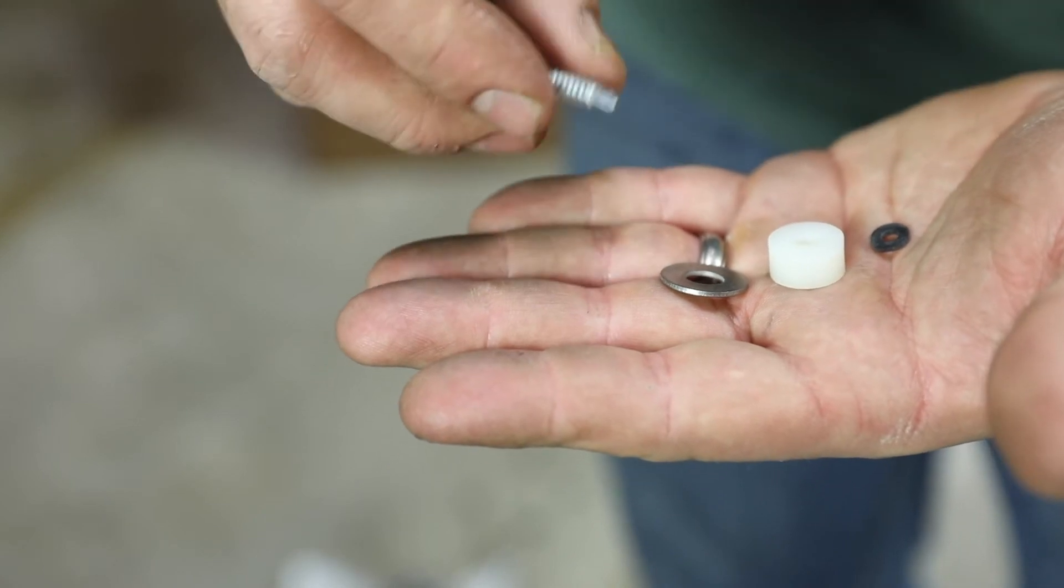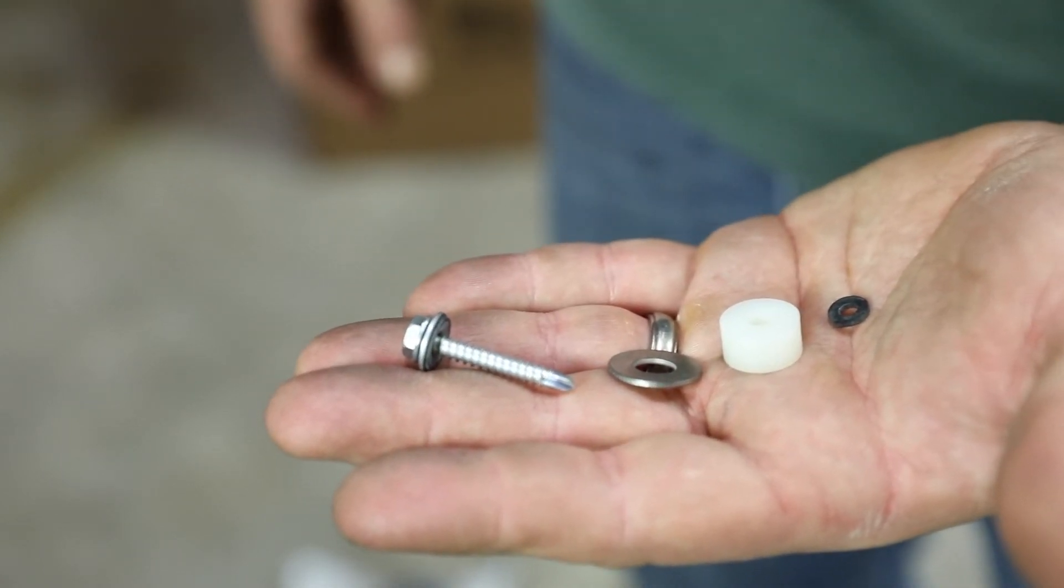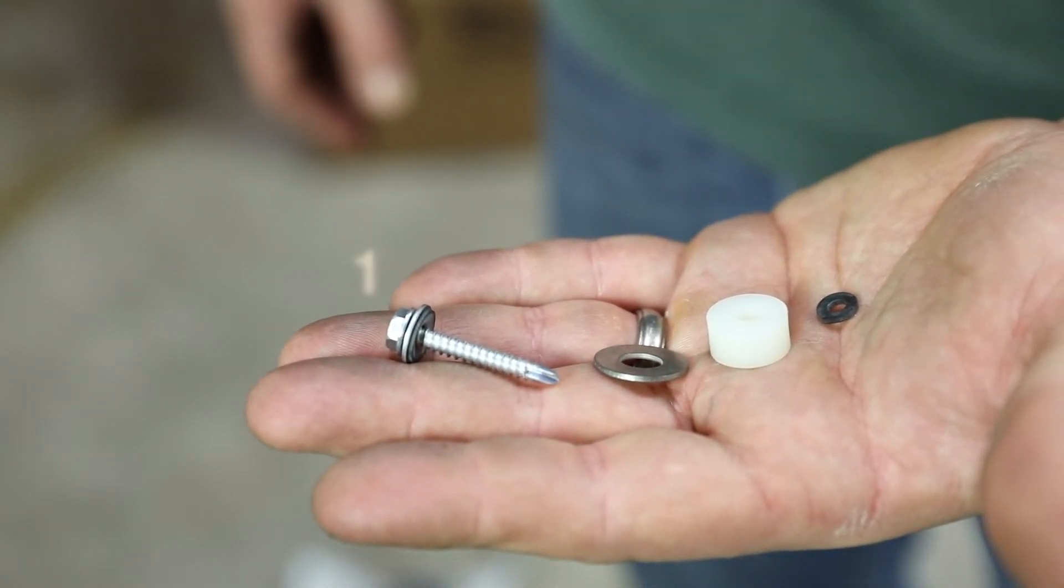Collect the four self-tapping screws and sets of washers to connect the base. The order is number one screw, number two steel washer, number three flow center base, number four plastic bushing, this is the white plastic bushing, number five is rubber washer. Be sure to use this order when assembling.